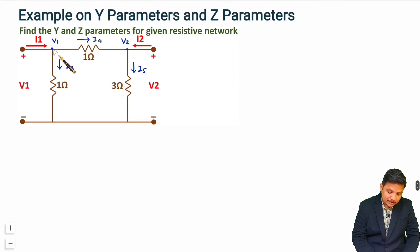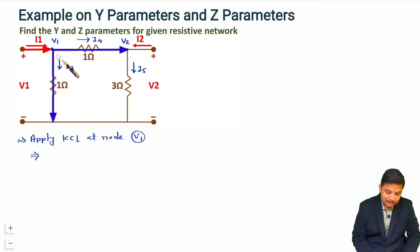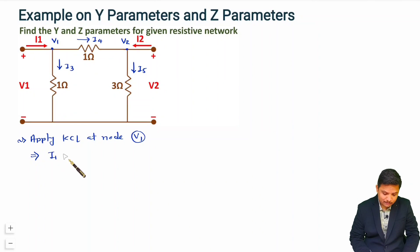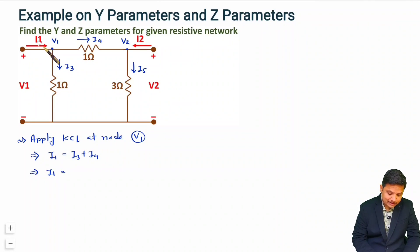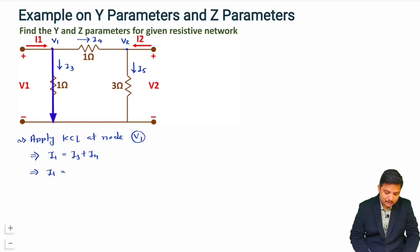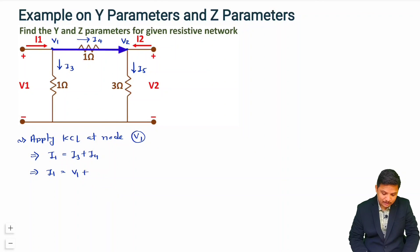First, I will apply KCL at node V1. Entering current equals leaving current: entering is i1 and leaving is i3 and i4, so i1 = i3 + i4. Now i3 is (V1 - 0) / resistance = V1, and i4 is (V1 - V2) / 1 = V1 - V2. Simplifying, we get i1 = 2V1 - V2.